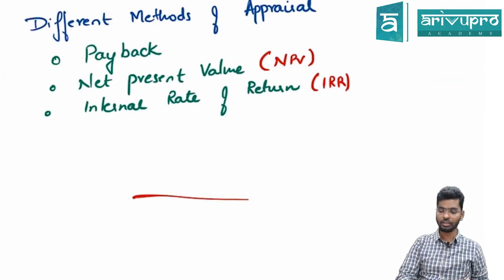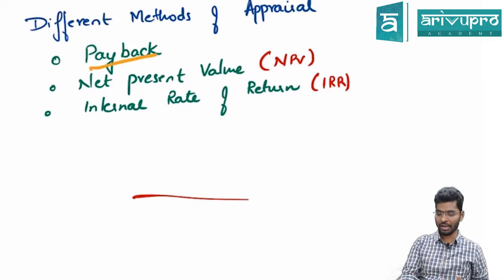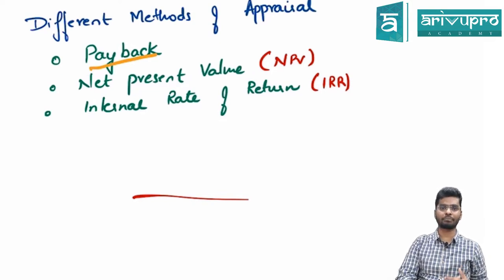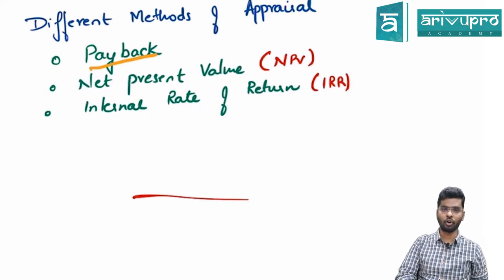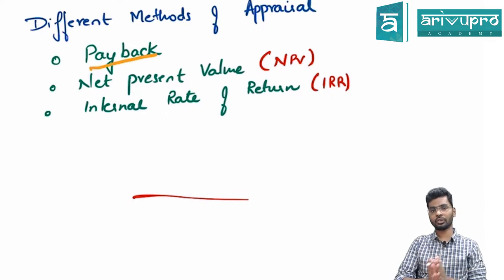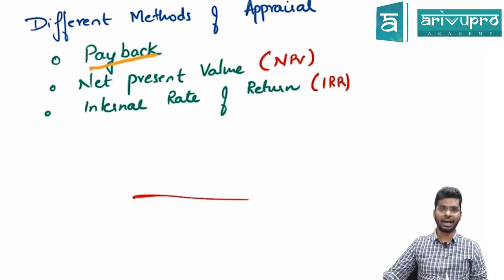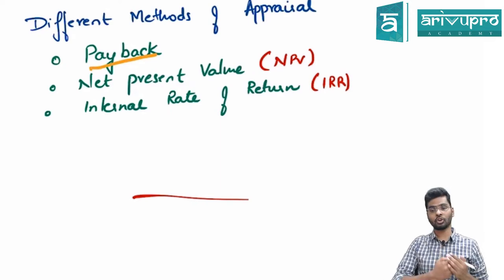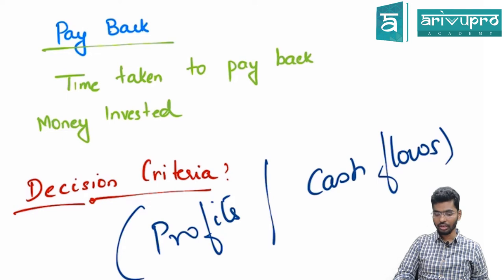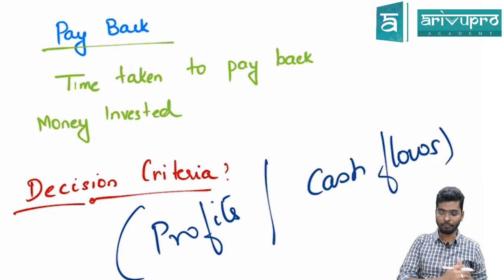There are three appraisal methods we will learn in this chapter. The first is the payback period. The second — and most popular — is the NPV method, or net present value. The third is the internal rate of return, or IRR. Let us look into the first method: the payback period. The word itself says how much time are you going to take to pay back your investment.